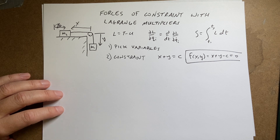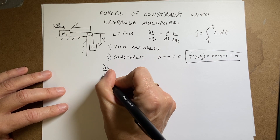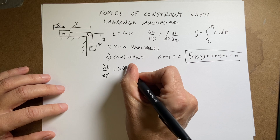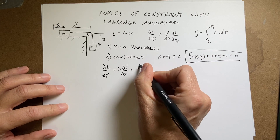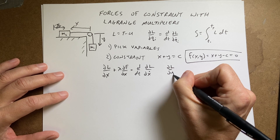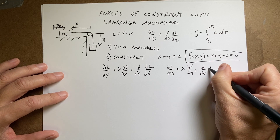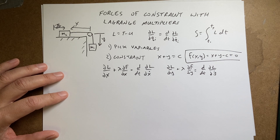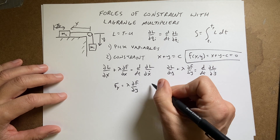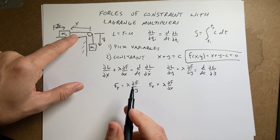Now the following modified Lagrange equation will be true, and I'm going to use my variables x and y. I have: the partial of L with respect to x, plus lambda times the partial of f with respect to x, equals d/dt of the partial of L with respect to x-dot. And then I have the same thing for y: the partial of L with respect to y, plus lambda — the same lambda — times the partial of f with respect to y, equals d/dt of the partial of L with respect to y-dot. Then I can find the constraint forces: F_y equals lambda times the partial of f with respect to y, and F_x equals lambda times the partial of f with respect to x.